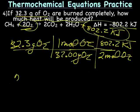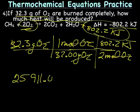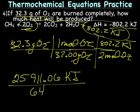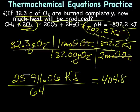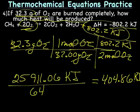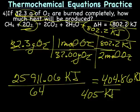When I multiply across the top, I got 25911.06 kilojoules. And when multiplying across the bottom, I came up with 64. From there we divide, giving us 404.86 kilojoules. Now if we go back and look at sig figs, we have three sig figs, so our final answer is going to be 405 kilojoules. So if you start with 32.3 grams of oxygen, you will be creating 405 kilojoules of energy. And that's all there is to it.